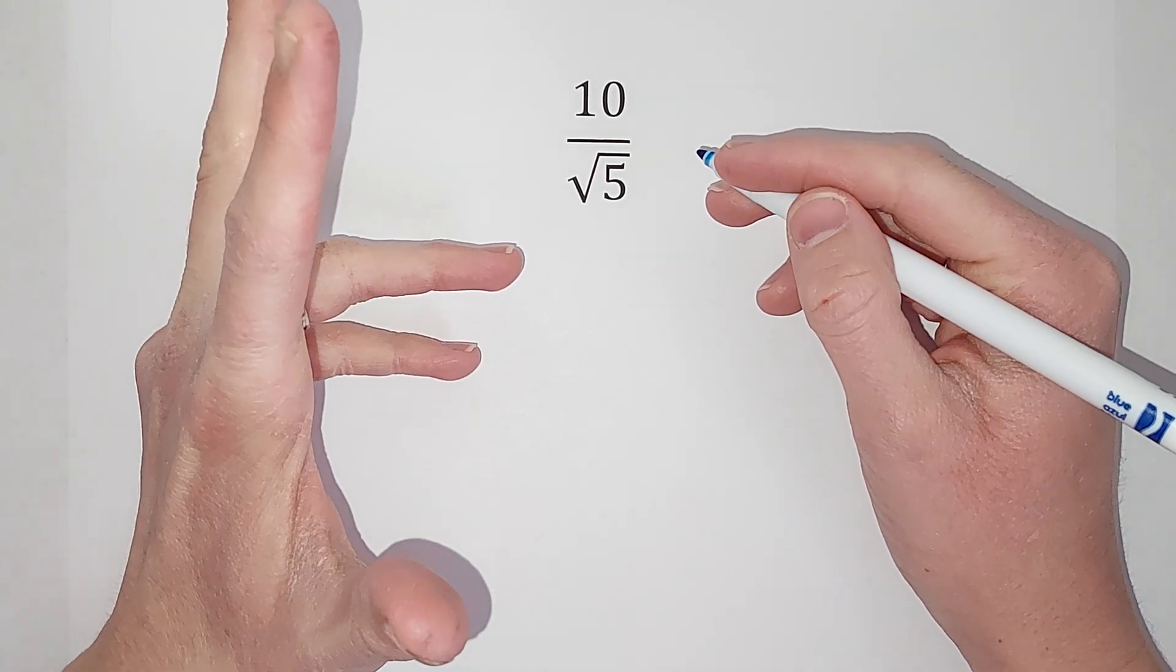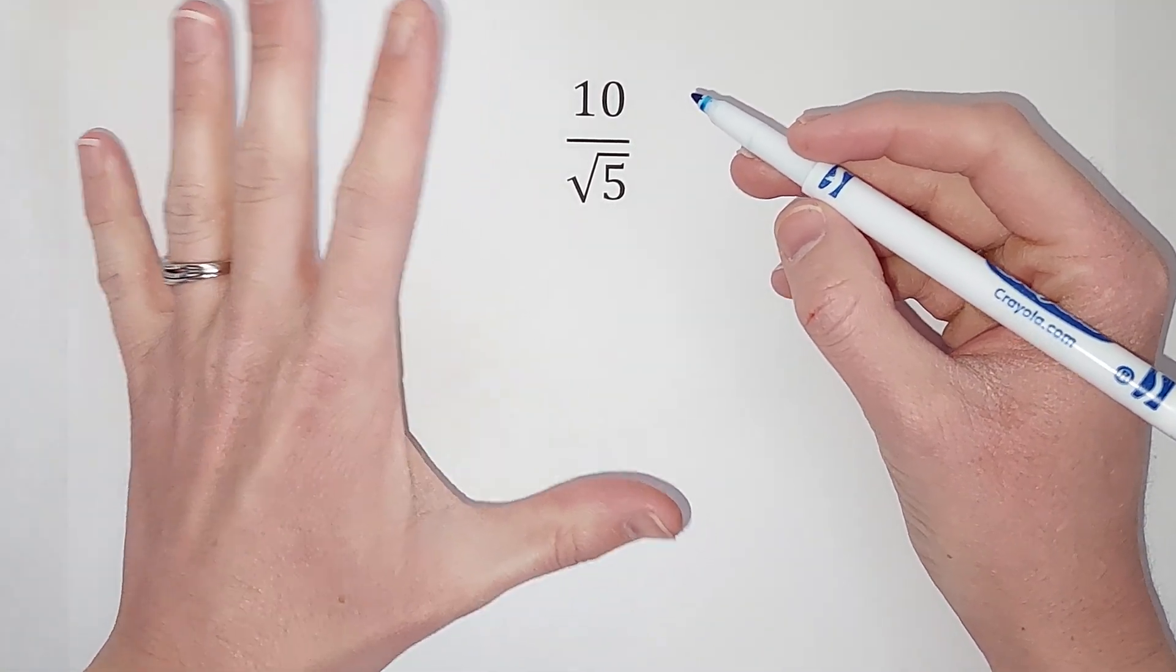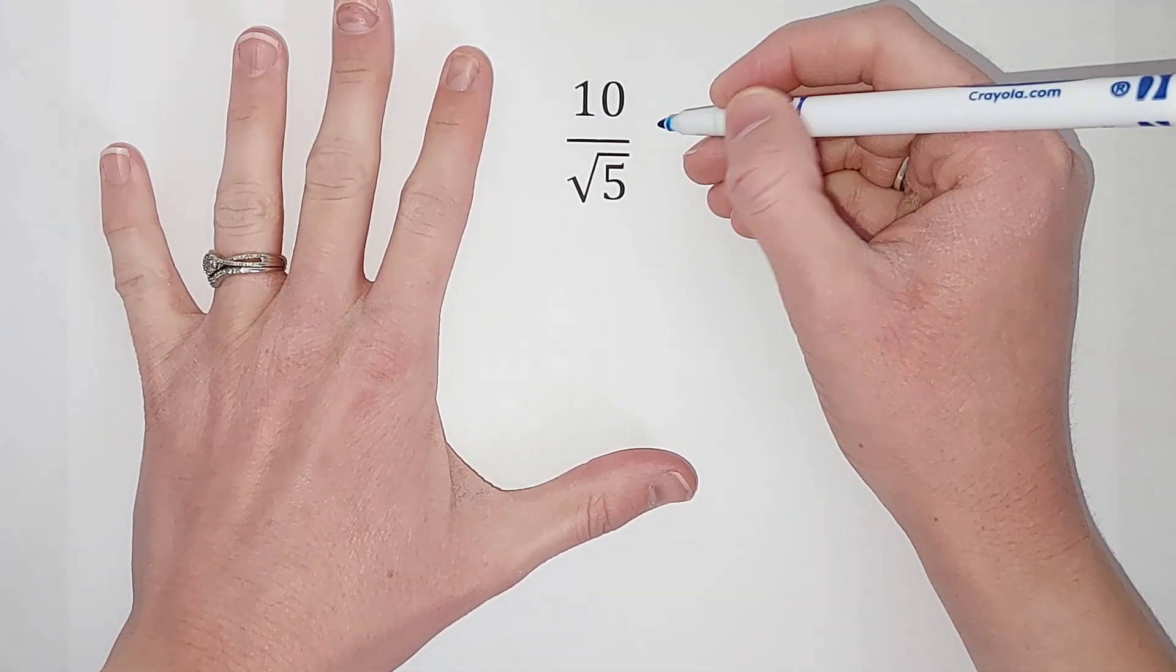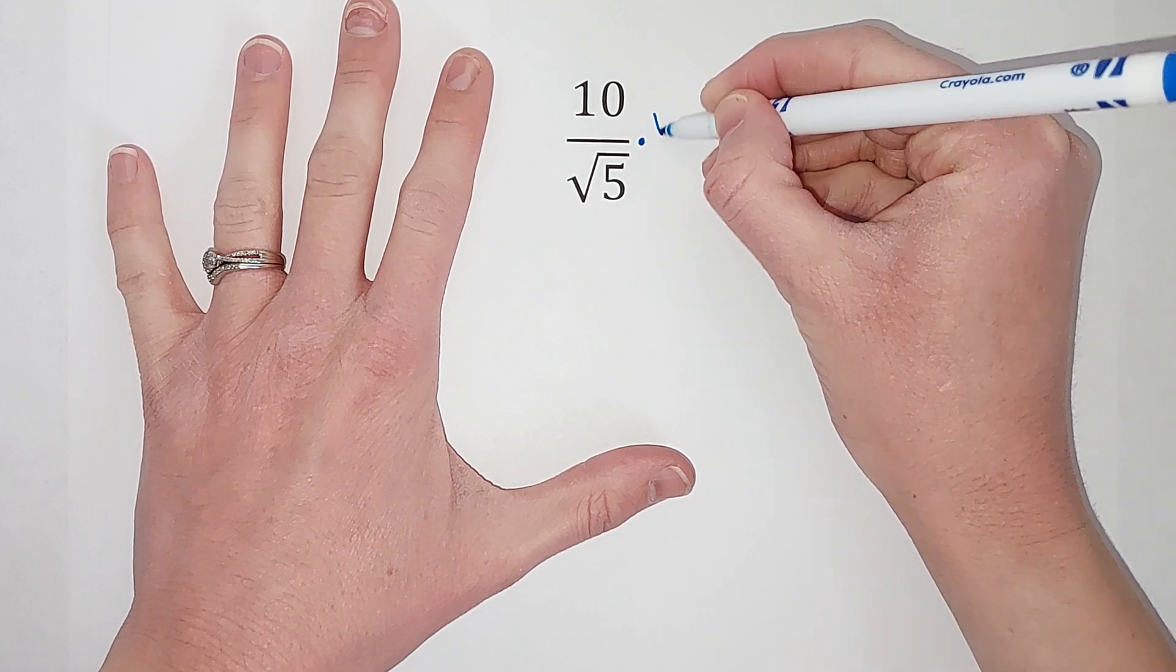Or you might get points docked. But luckily it's a pretty easy fix. Watch what we're gonna do. This is called rationalizing the denominator. What we're going to do is multiply the top and the bottom by the square root of 5.